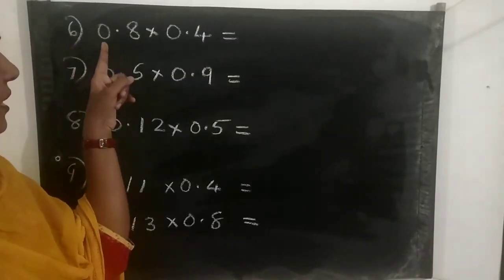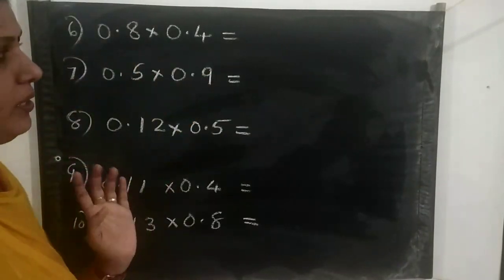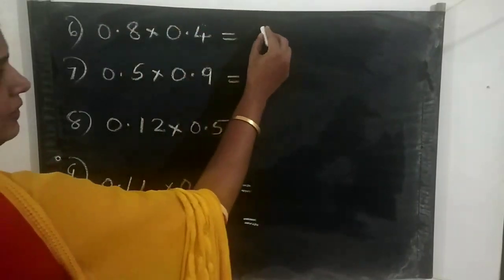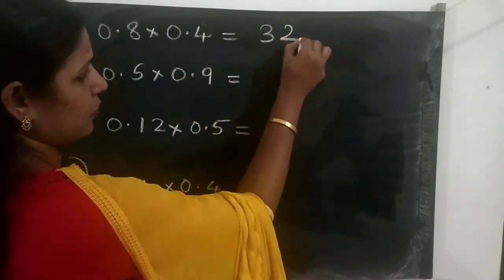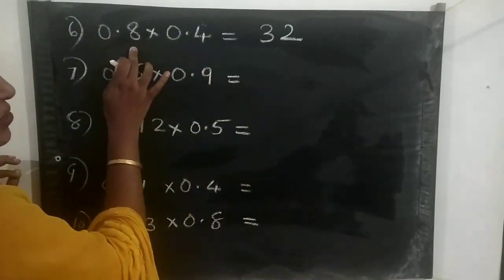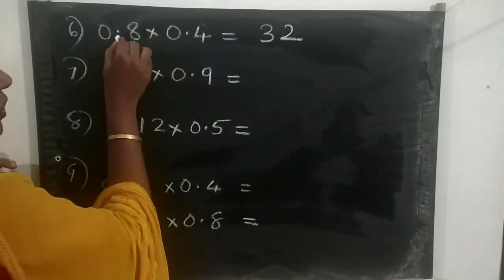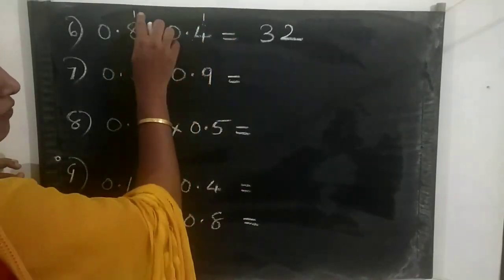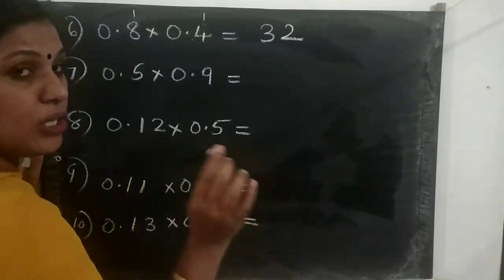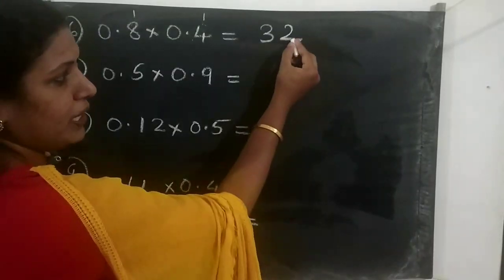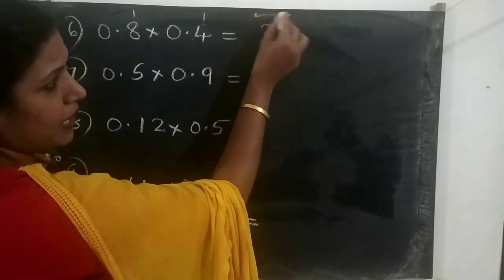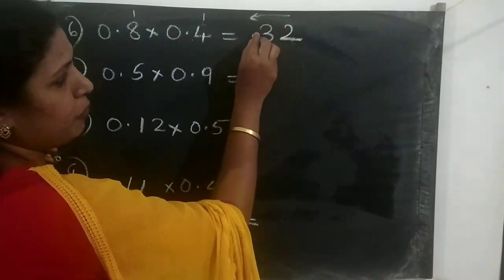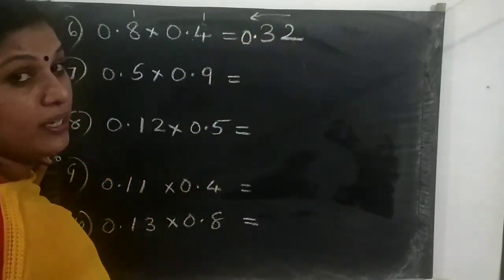Question number 6 is 0.8 into 0.4. First we multiply: 8 fours are 32, so we write 32. Then count the place values to the right of the decimals — here one number after each decimal point, so 1 plus 1 equals 2 places. We count 2 places from right to left and put the point. The answer is 0.32.